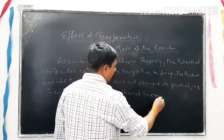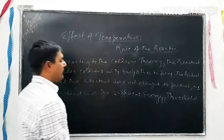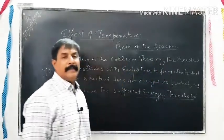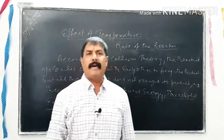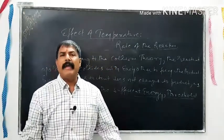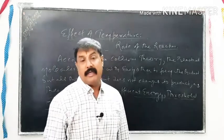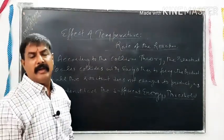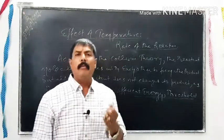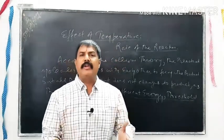उस sufficient energy को Threshold Energy कहते हैं। कल बताया था कि हम reactions को energy दे सकते हैं - by supplying heat, light, UV radiations, electrical energy, या mechanical energy। अब हम बात करेंगे temperature की - temperature से मिलेगी heat energy। जब हम तापमान बढ़ाएंगे तो जिन reactants को threshold energy नहीं मिली थी उनको भी मिल जाएगी और वो reaction कर लेंगे। इससे rate of reaction बढ़ जाएगी।